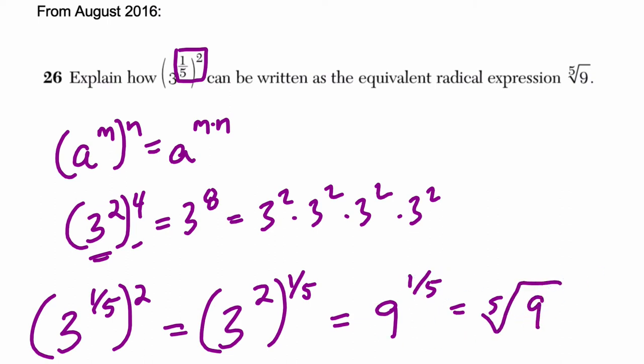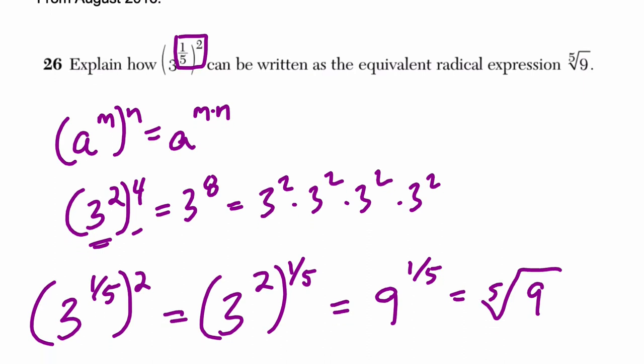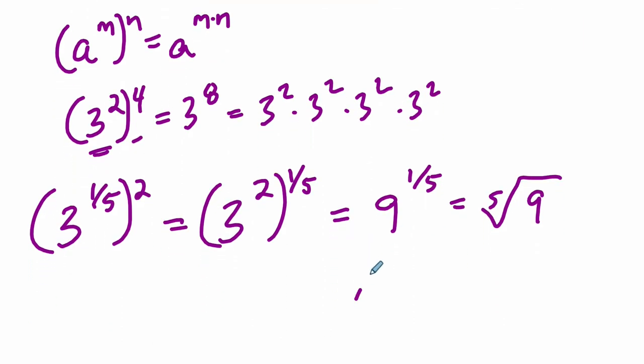To explain this piece right here, you don't have to get into the theory, but essentially you could state that anything to the 1 over n power equals the nth root of that base. So, in this case, 9 to the 1/5 is the 5th root of 9.